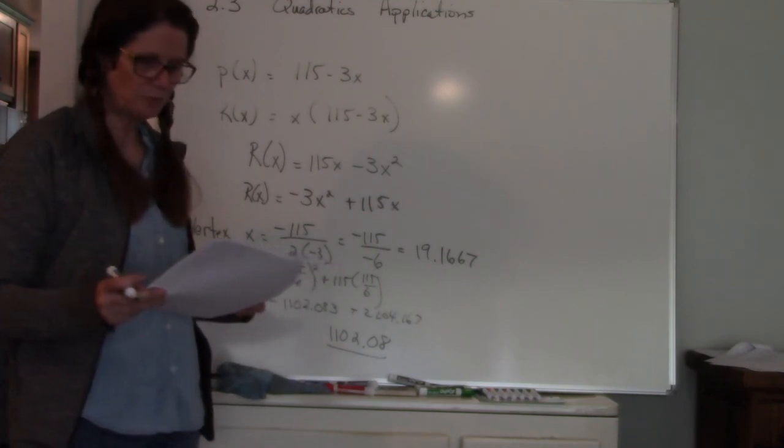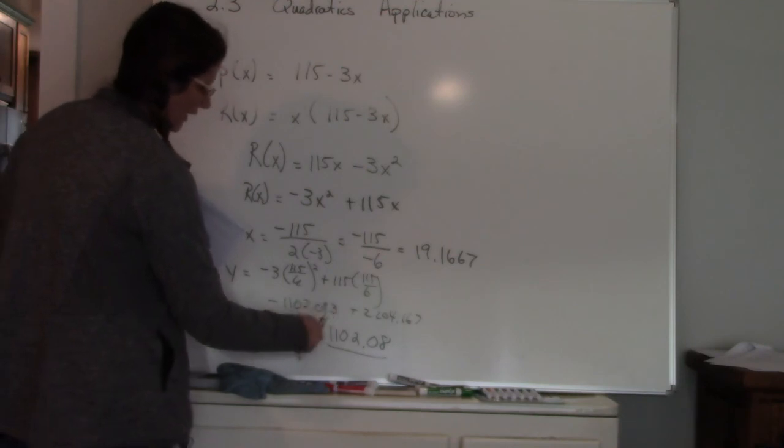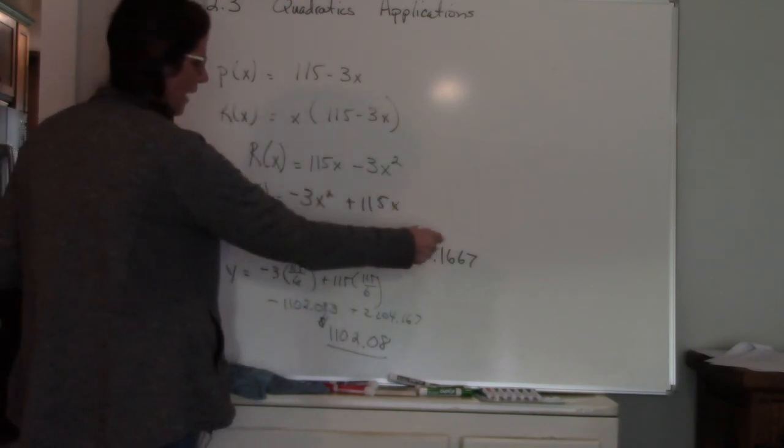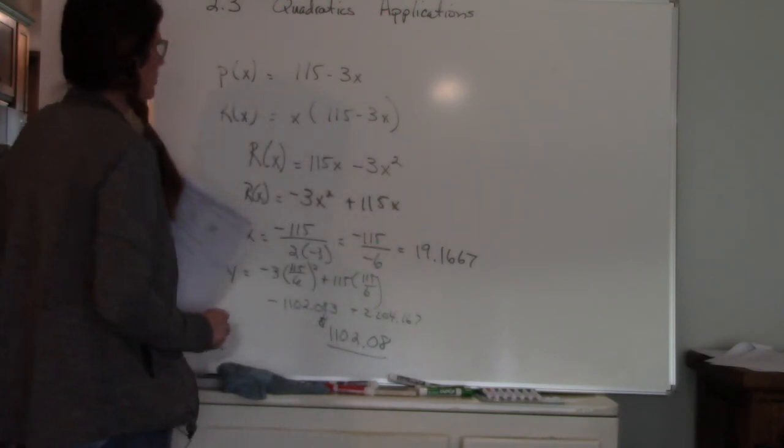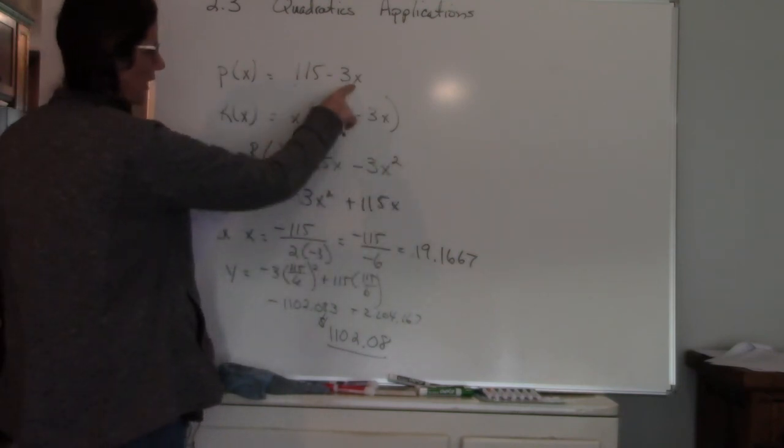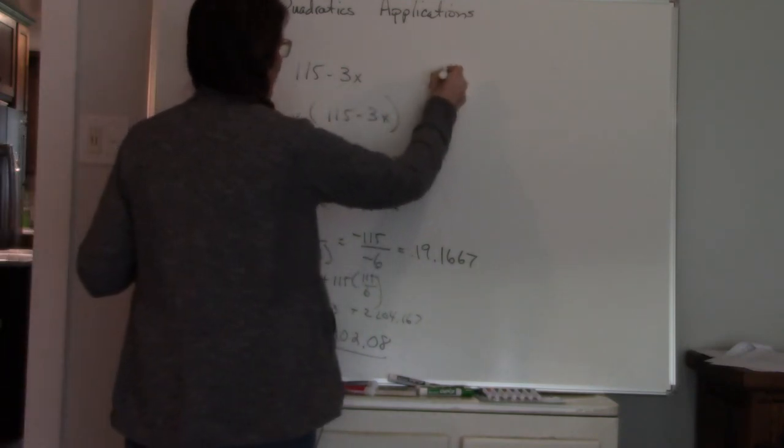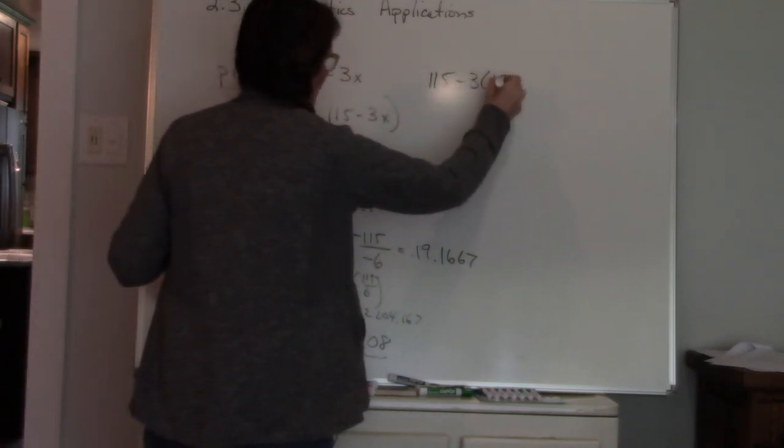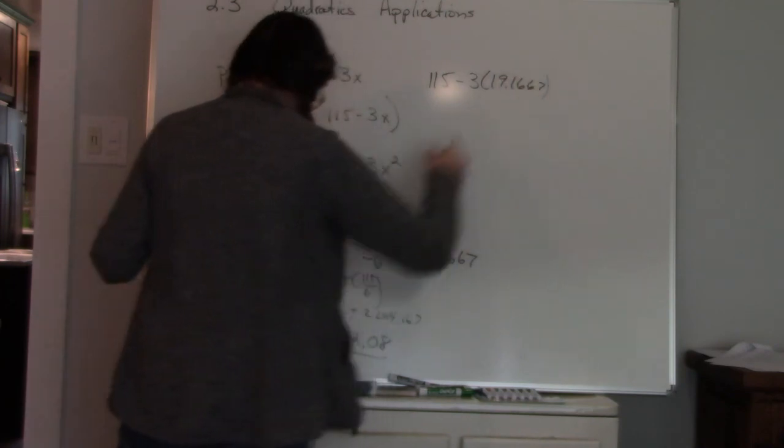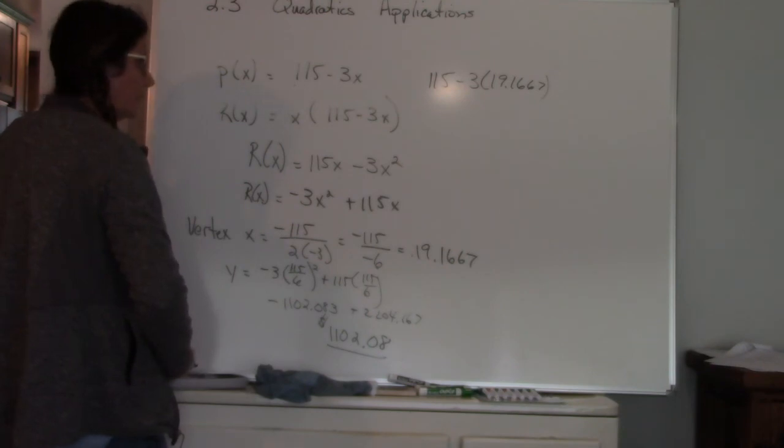And then what's the wholesale price per chip? So all that means, this is my revenue, that's my maximum revenue, this is the maximum number of chips that I'm going to produce, and my price is I'm going to plug the number, X represents the number, I'm going to plug the number back into my price function. So I get 115 minus 3 times 19 point...